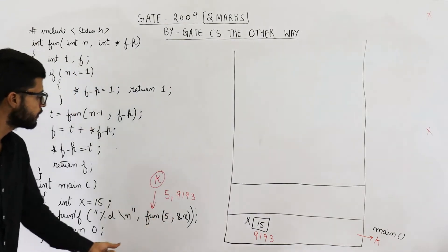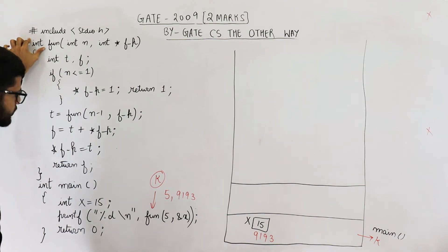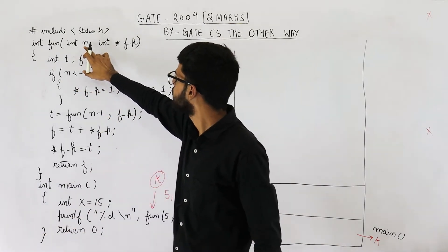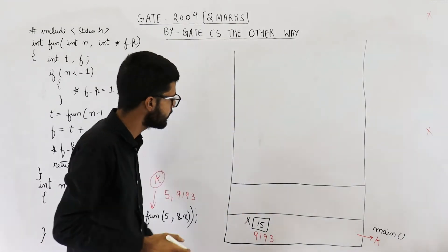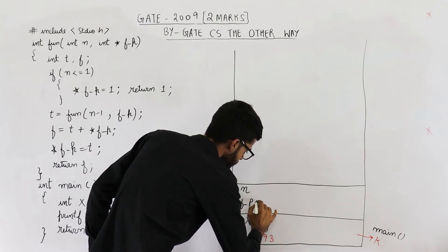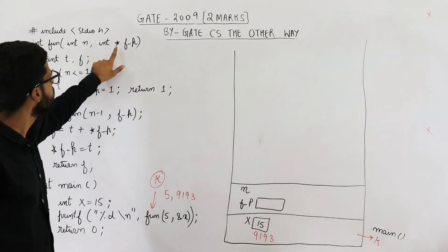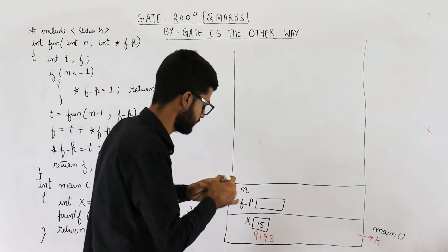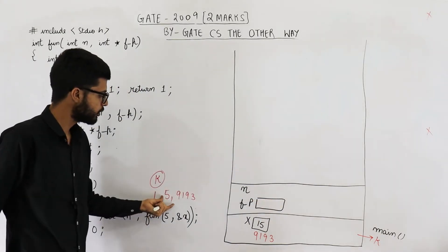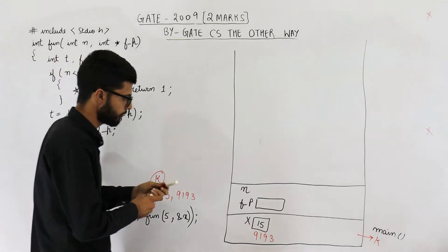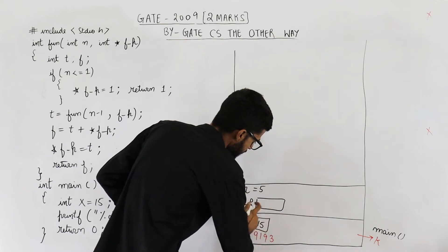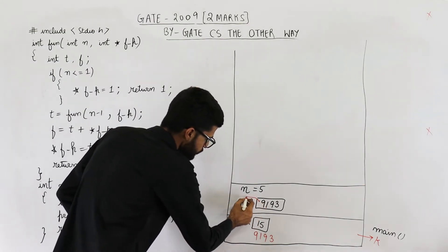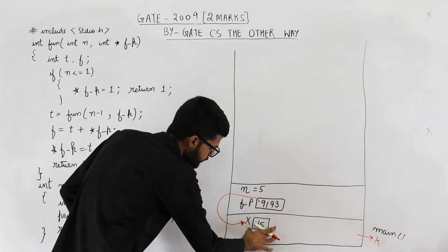All the local variables of function fun will be declared here. Control goes to this function. Its return type is integer and we are printing an integer, so things will work fine. Inside this function there are two parameters: n and fp. fp is a pointer to integer, so it can hold only the address of some integer. We are passing 5 and 9193, so n gets 5 and fp gets 9193 — meaning fp is pointing to variable x at address 9193.